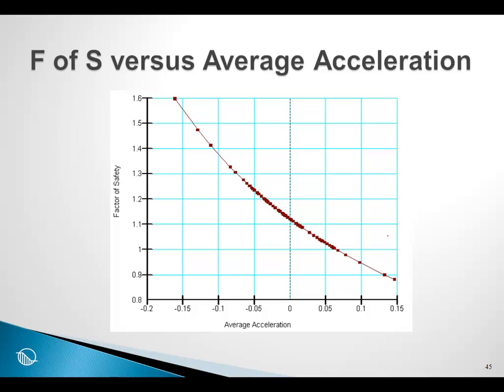The first thing that slope-w does, it needs to find what is the average acceleration that would make the factor of safety one. So slope-w produces this graph and then says, at a factor of safety of one, what is the average acceleration? This is known as the yield acceleration.